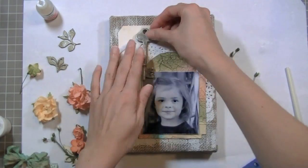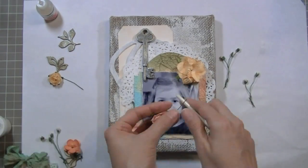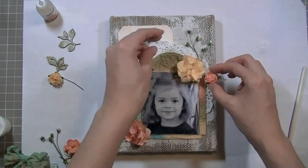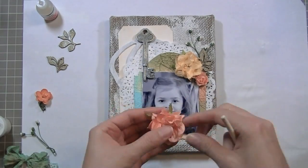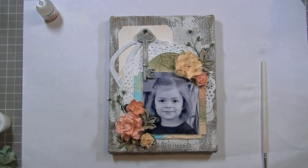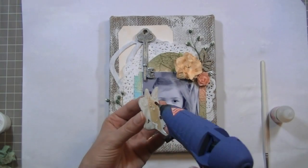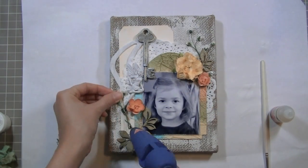I'm going to be using glossy accents and then also some hot glue to keep things in place as the glossy accents dries. I do that mostly on the heavy pieces just because the glossy accents is a very good adhesive and it's great for heavy things and metal objects.